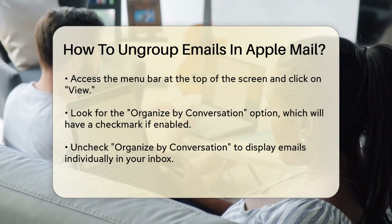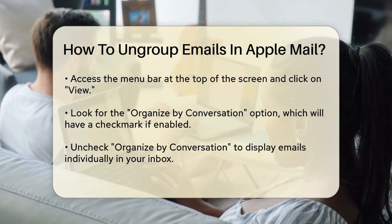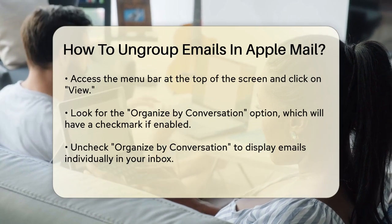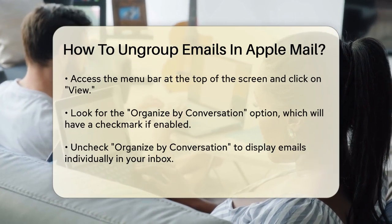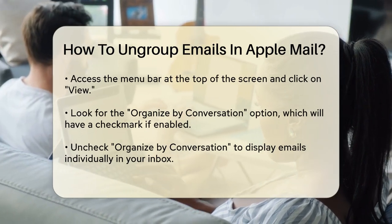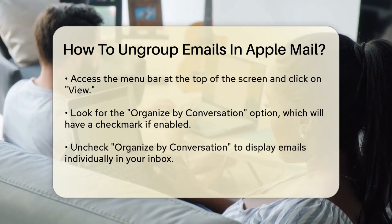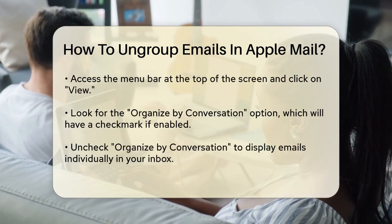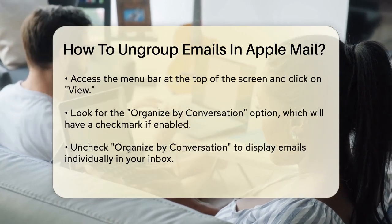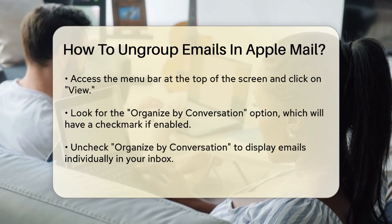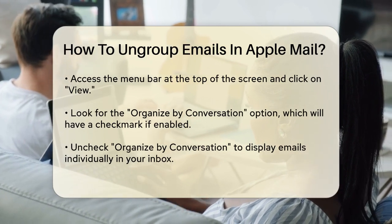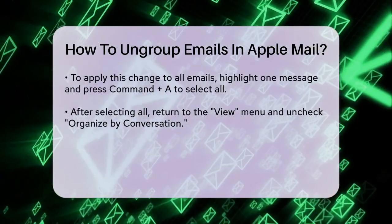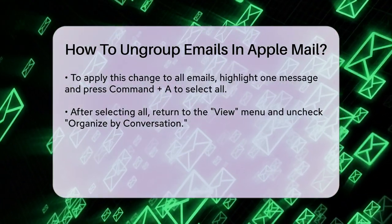simply uncheck the Organize by Conversation option. This will immediately change how your emails are displayed, showing each email as a single item in your inbox instead of being grouped together. If you want to apply this change to all your emails at once, you can select all messages in your inbox by highlighting one message, then pressing Command-A to select all. Then go back to the View menu and uncheck Organize by Conversation.